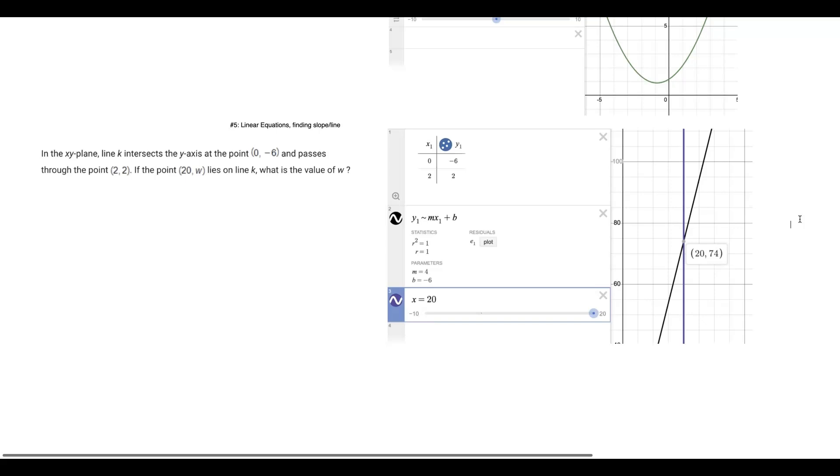Instead of y1 tilde mx1 plus b, you would be ax squared plus bx plus c. Really easy to replicate here. What this does is after putting the parameters in, it tells you the value of y. It tells us the slope, and it also tells us the constant b.